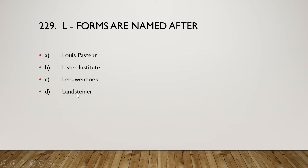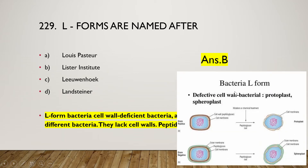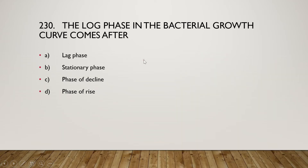Next question: L forms are named after Louis Pasteur, Lister Institute, Leeuwenhoek, or Landsteiner? The right answer is option B — Lister Institute, represented by 'L'. L-form bacteria are cell wall-deficient bacteria derived from different bacteria; they lack cell wall peptidoglycan. If the cell wall is lacking in gram-positive bacteria it is called a protoplast, and if lacking in gram-negative bacteria it is called a spheroplast.